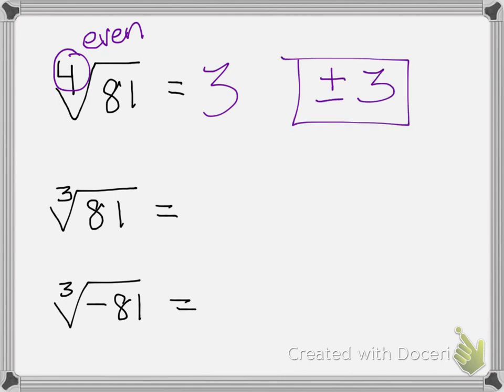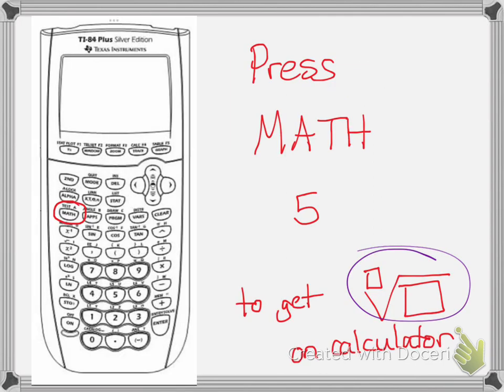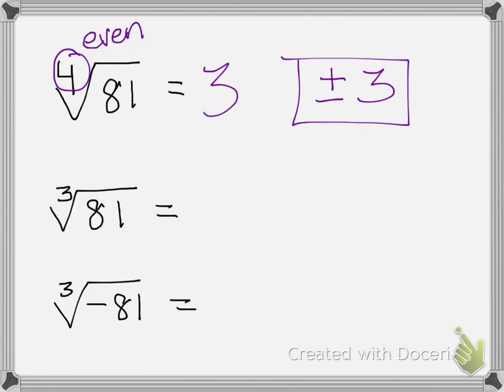All right, let's do the same thing for the cube root of 81. Just a reminder, you press math, number five, and then type in three for nth root and 81. It's going to say that it equals three.